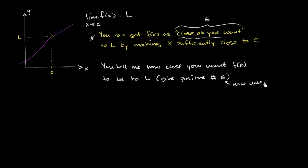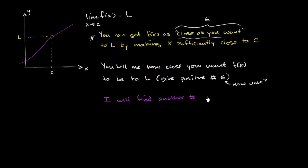So for example, if epsilon is 0.01, that says that you want f of x to be within 0.01 of l. And so what I then do is say, you've given me that epsilon, and I'm going to find you another positive number, which we'll call delta — the lowercase Greek letter delta.